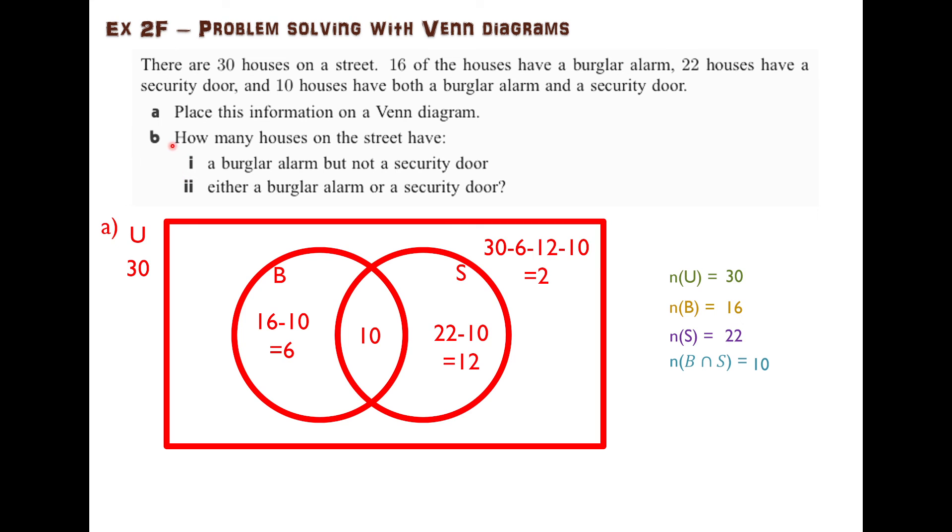We can start answering the questions. How many houses on the street have a burglar alarm but not a security door? So that is this category here. These are the ones that are in the burglar alarm set but not in the security door set. We've already figured out that it's six houses.